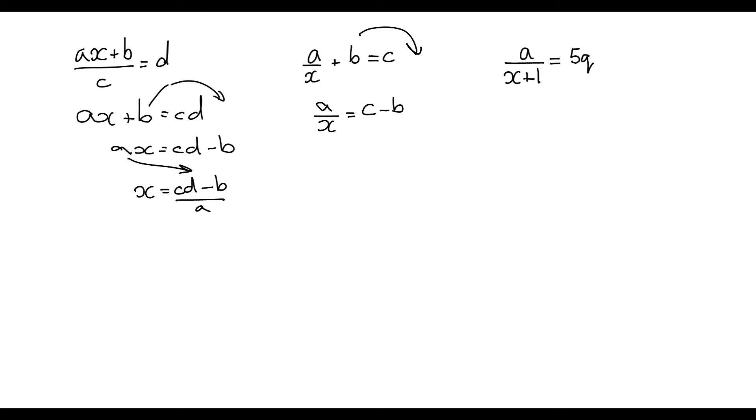We're now going to multiply by the denominator. So we have a equals c minus b times x. So x, like in our previous video, is being multiplied by this whole bracket. So we're going to divide by this bracket so we get a over c minus b equals x. But obviously we want to write it as x equals.